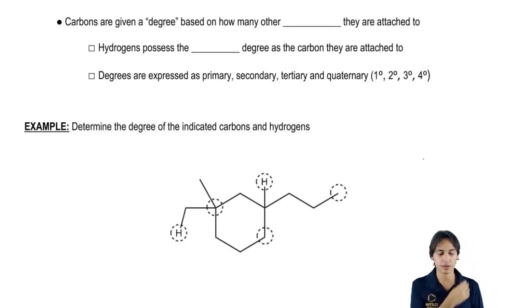The carbon here is given a degree based on how many other carbons they are attached to. What I do here is say that not all carbons are the same. I'm going to differentiate my carbons based on how many other carbons they're attached to. I'm going to show you an example of that in a second.